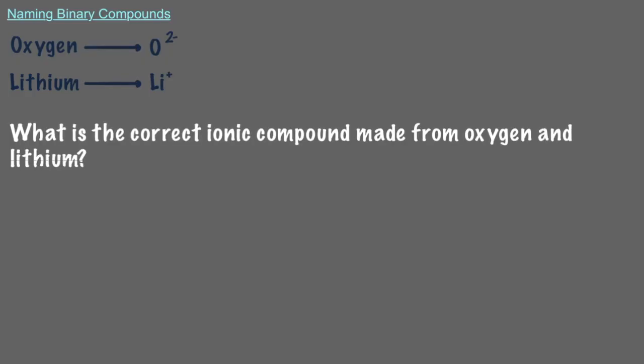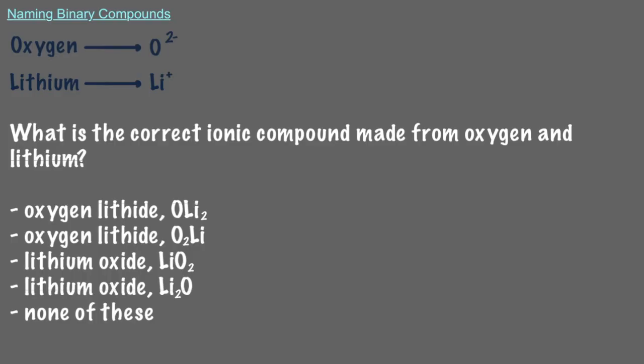Let's try this one. Oxygen makes an anion with a 2 minus charge. Lithium is an alkali metal, so its ion will always have a plus 1 charge. What is the correct ionic compound made from oxygen and lithium? Since lithium is the metal, it goes first, and the name of the compound is lithium oxide. Notice that we replace the end of the element's name, oxygen, with ide like before. Because we want the neutral ionic compound, we need 2 lithium ions, each with a plus 1 charge, and 1 oxide ion, with its negative 2 charge.